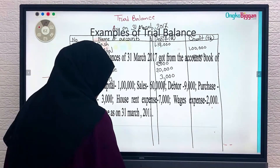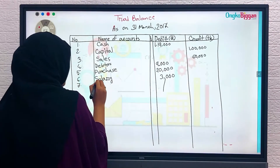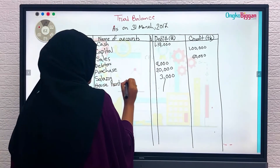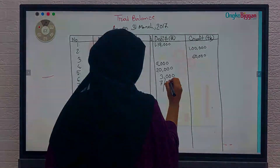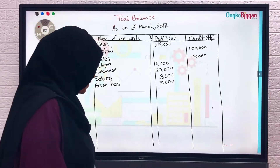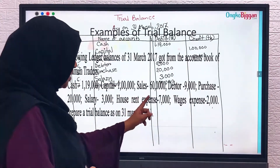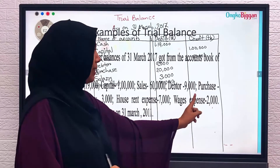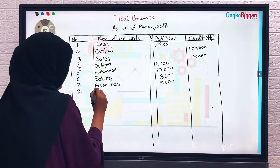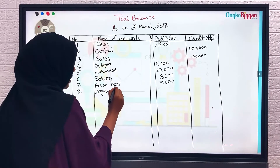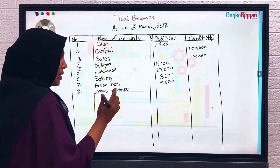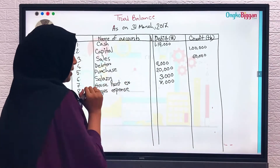Next we have salary 3,000 after purchase, and then house rent expense 7,000 — number seven. House rent is our expense so we write it on the debit side. Number eight: wages expense 2,000, also an expense, so it also goes on the debit side.